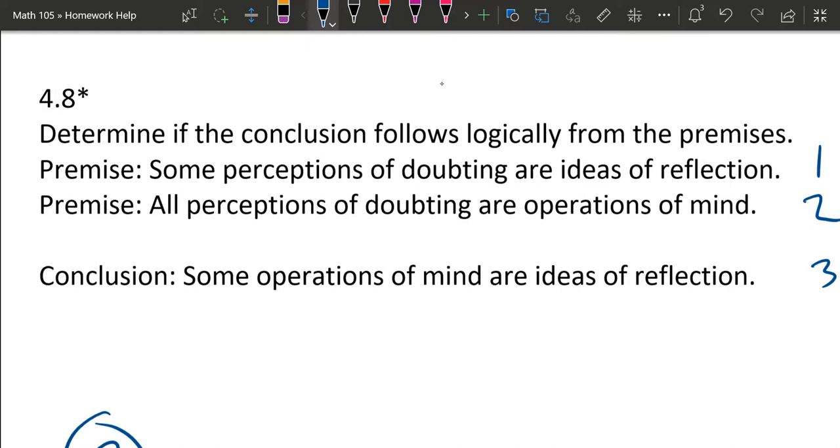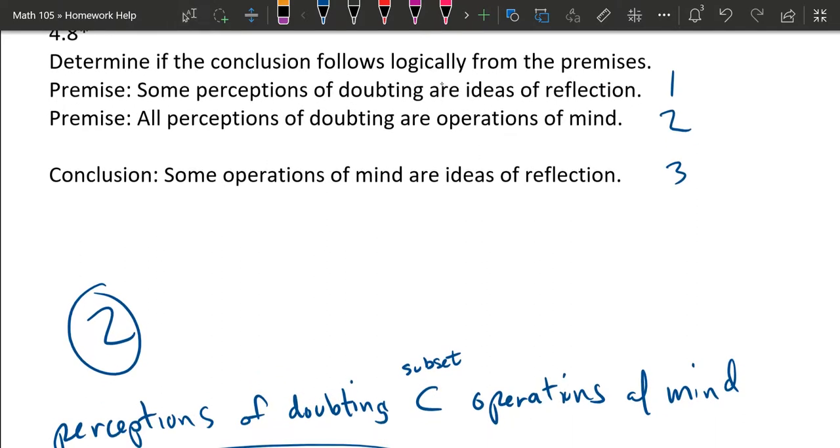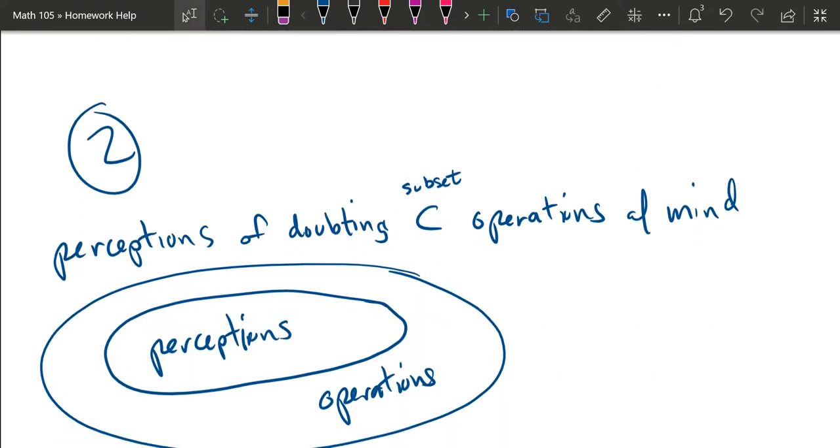We're actually going to start with premise number two. They're not strictly ordered so you can examine whichever one you want first. So we're going to start with premise number two because it's a little bit stronger. It says all perceptions of doubting are operations of mind. What that means is if you have a perception it's automatically an operation of the mind and that is what a subset means. Every perception is also an operation. In a Venn diagram this is what it looks like. All the perceptions are inside the set of the operations. So that's premise two.